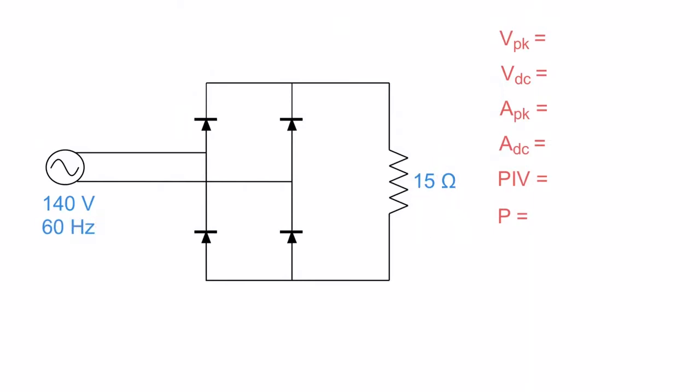So our first step is to take this 140 volts and take that up to peak. As before, we just go 140 divided by 0.707, and we get our peak voltage. 198 volts peak. There we go, we throw that right over there.